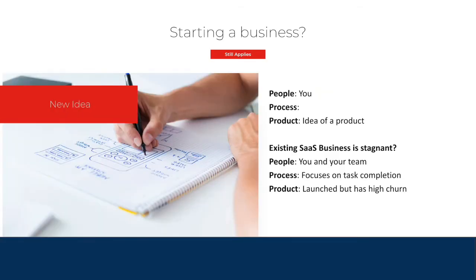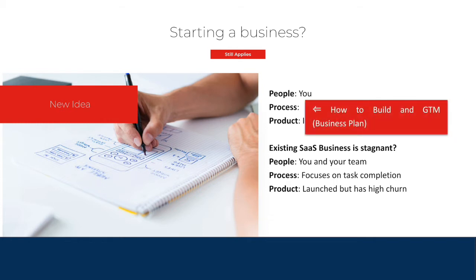For example, if you were starting a new business and the people involved is basically just you, and you have an idea of what you want to produce as a new product, where's the weak link? You haven't established a process. The process is important for your go-to-market strategy, a business plan, a feasibility study, a product-market fit study — whatever you need to be able to launch a successful business.